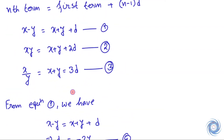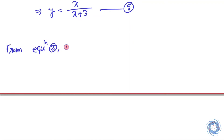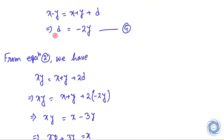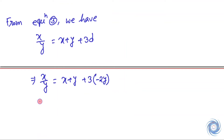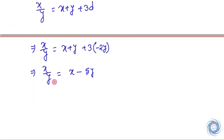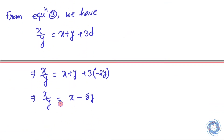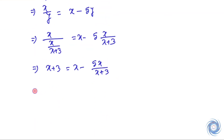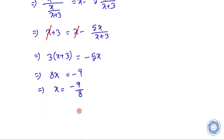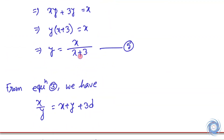Now from equation 3, we use equation 4 and equation 5 — the value of d and the value of y in terms of x. Substituting the value of y as x over x plus 3, we solve and finally get x equals minus 9 over 8.